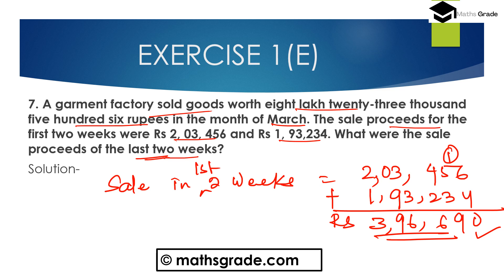Now find out the sale for the last two weeks. The total amount is 8 lakh 23,566 rupees minus 3 lakh 96,690 rupees. We need to subtract the first two weeks' sales from the total monthly sales.